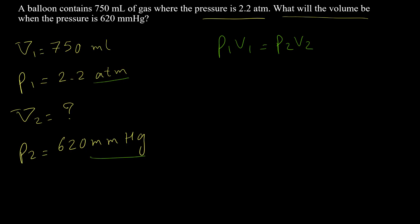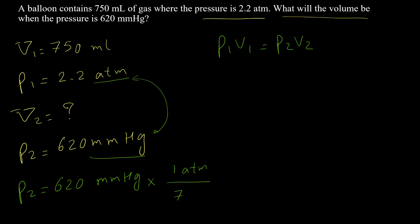It doesn't matter which direction you convert; I will convert p2 from mmHg to atm. p2 = 620 mmHg × (1 atm / 760 mmHg). Using this conversion factor, the answer is 0.82 atm.